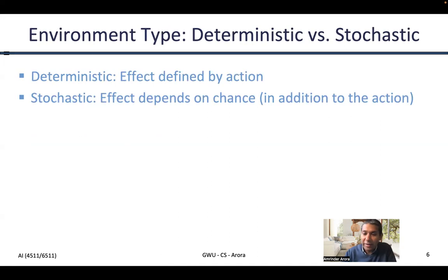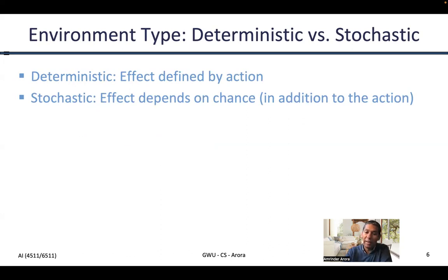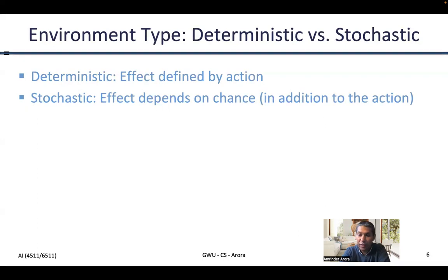The next different environment type attribute is called deterministic — whether the environment is deterministic or stochastic. Stochastic means there's an element of chance: even when you do the action, what you might see may depend on what comes up on the dice. For example, in a game of chance, if you roll a three it might mean going north, and if you roll a two it means going in another direction. If the environment is deterministic, the effect is determined solely by the action.